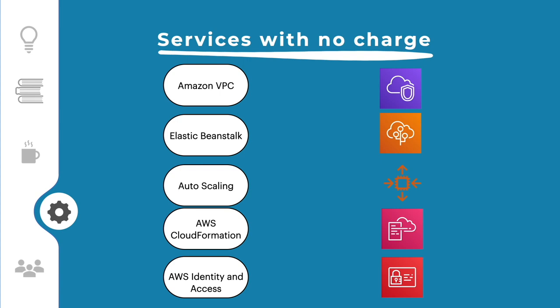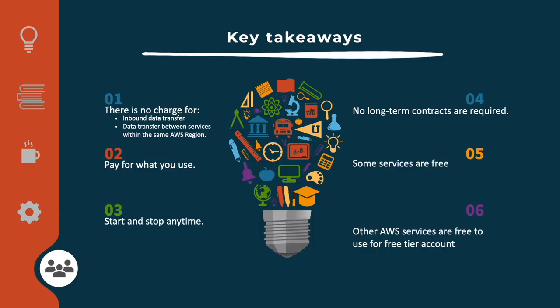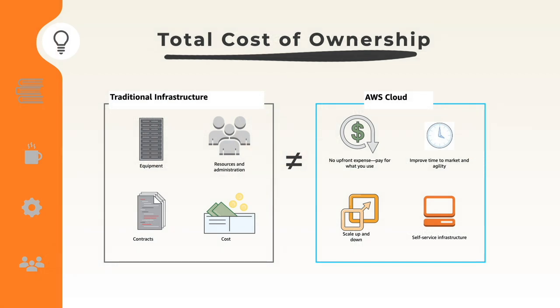However, the resources created by Elastic Beanstalk, Auto Scaling, or CloudFormation — such as additional EC2 machines added to support demand — will be charged. Key takeaways: there is no charge for inbound data transfer or data transfer between services within the same region. You pay for what you use and can start and stop at any time with on-demand instances — no long-term contract required. Some services are completely free of charge.